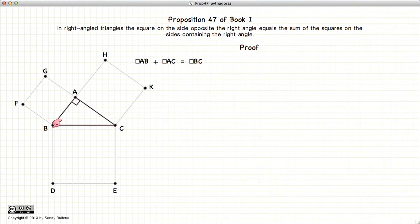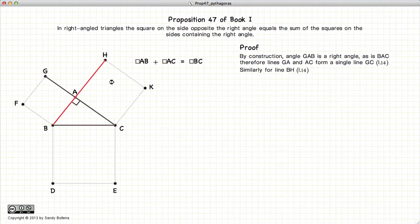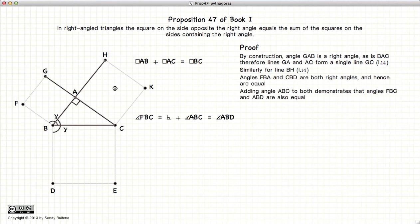Now C, A, B is a right angle. G, A, B is a right angle because of the way we constructed our square. So the angle G, A, C is a right angle plus a right angle or two right angles. And according to Proposition 14, that makes it a straight line, similarly for B, H.